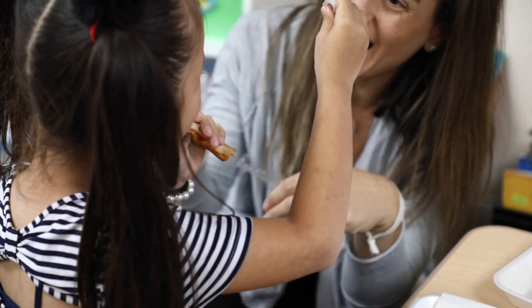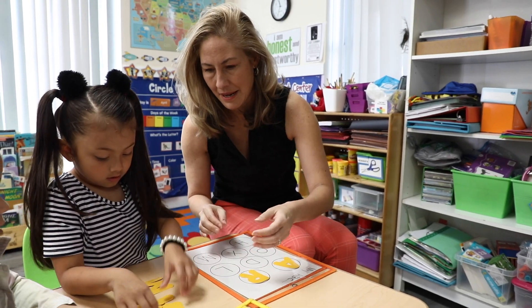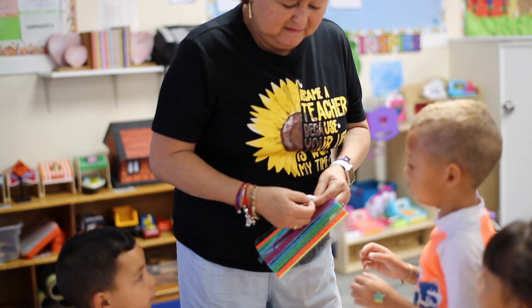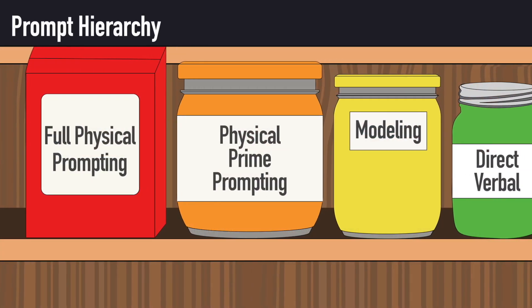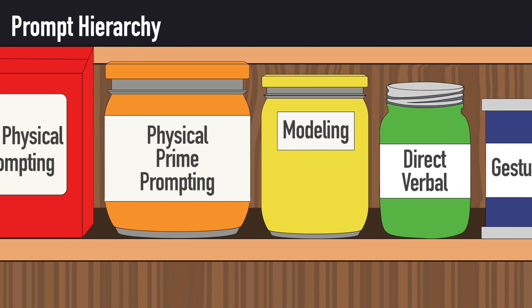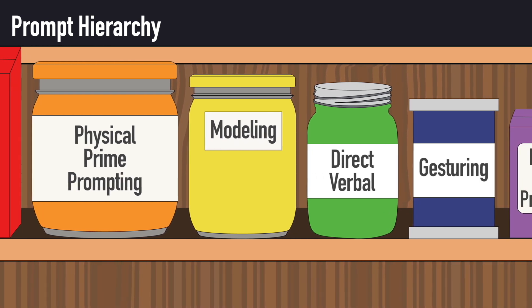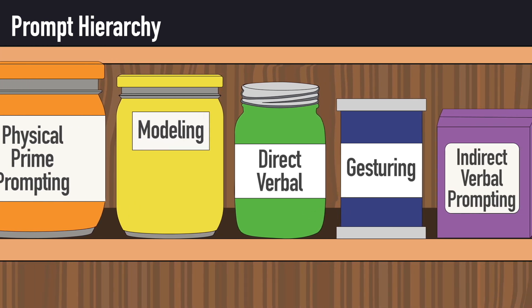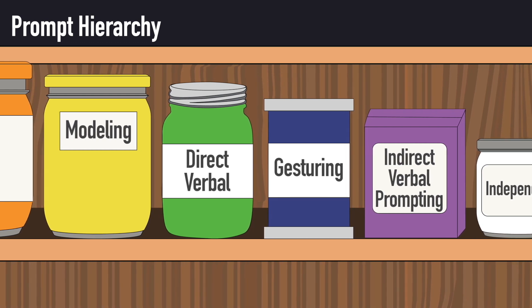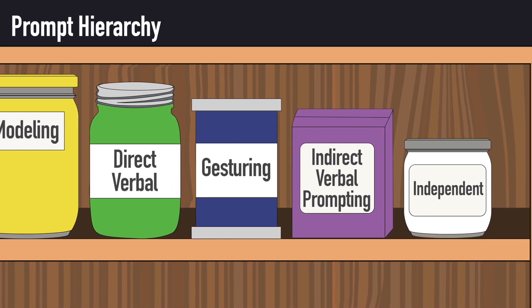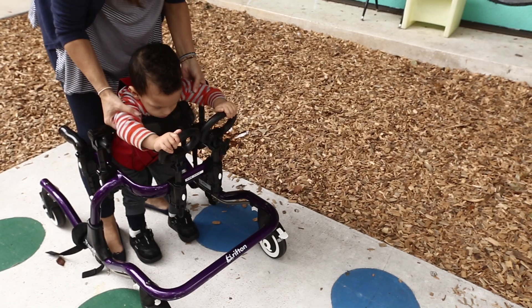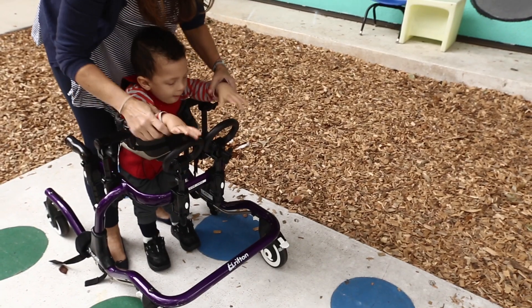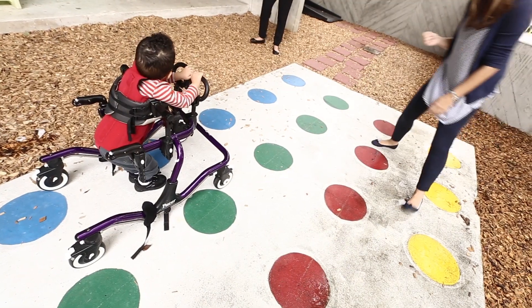Prompting is a go-to instructional strategy almost all teachers rely on to help children become as independent as possible in a given task. There are different levels of prompting from most to least supported — we call this prompt hierarchy. This hierarchy provides a systematic way to determine or adjust how much help we give a child, where the ultimate goal is that the child completes the targeted task with as little assistance from the teacher as possible.